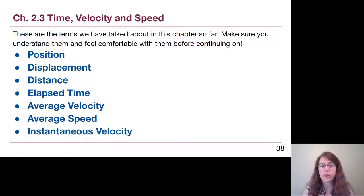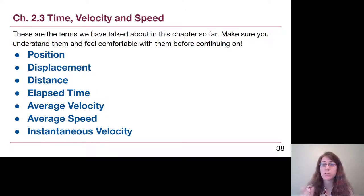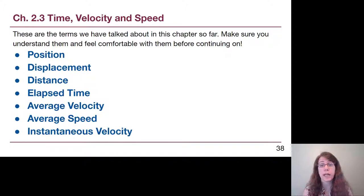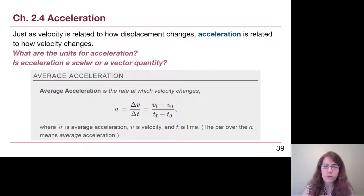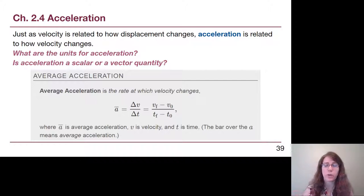When we think about all these different terms, we're basically adding new ideas as we go. Position was our starting point, displacement is a change in position, and velocity is a displacement over an elapsed time. What we're adding now is the idea of acceleration, which is a change in velocity over an elapsed time. The textbook definition uses the delta notation we've seen before, and also writes it out as final minus initial.